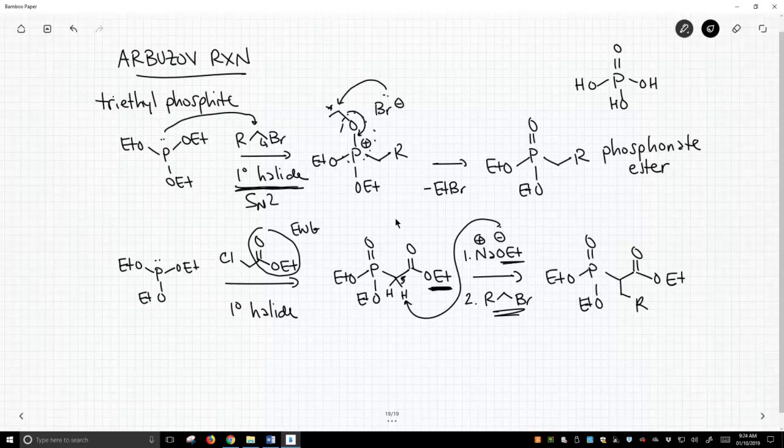And we can put other groups on here. So yes, it's a limitation. You can only do primary halides, but if you use the groups that people typically do, which is where R is an electron withdrawing group, then once you make your phosphonate ester through the Arbuzov reaction, you can easily deprotonate it and add any other groups that you want to. So it's a limitation. You have to use a primary halide, but the products you get, we can easily add on other groups. So it's not that big of a limitation. So this is the Arbuzov reaction.